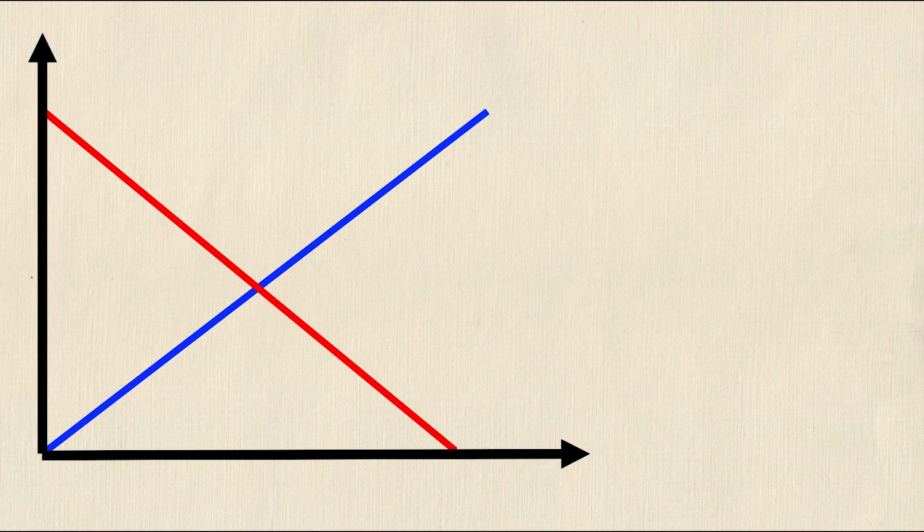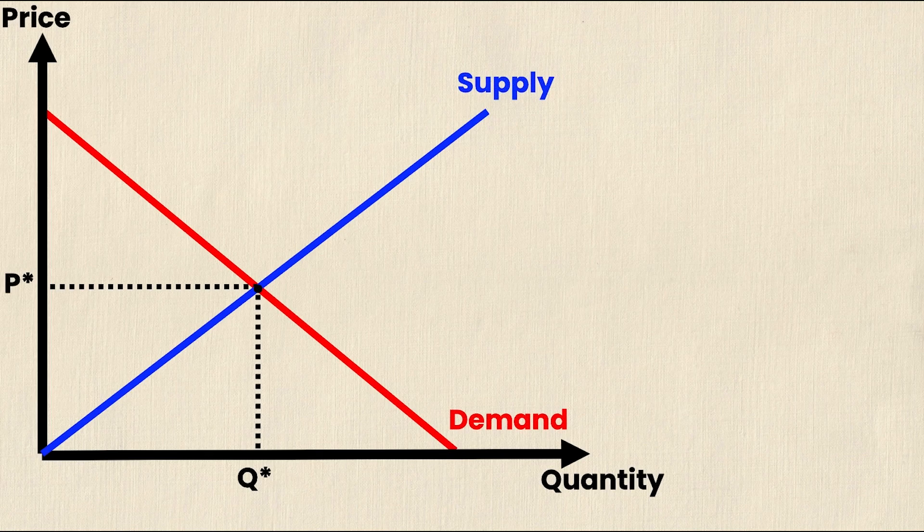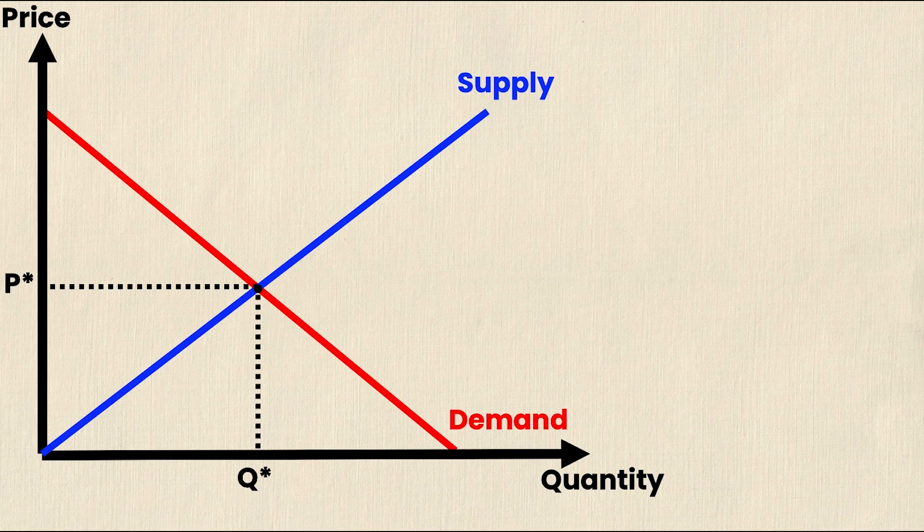To start we need to draw our general supply and demand graph starting with our axes, our supply and demand curves, and then labeling everything. So price on the y-axis, quantity on the x-axis, our p star and q star denoting the intersection of my supply and demand curves and then of course the supply and demand curves labeled as well.